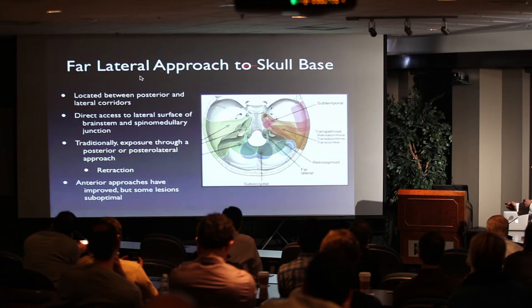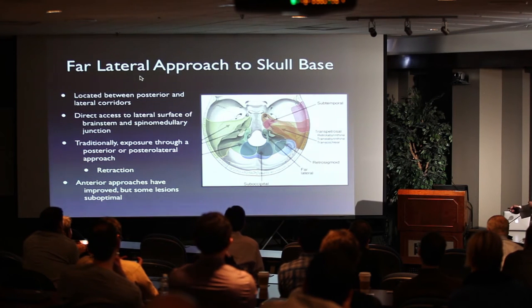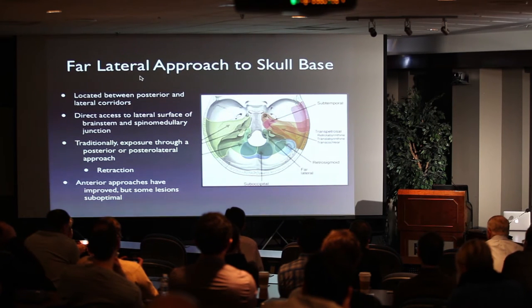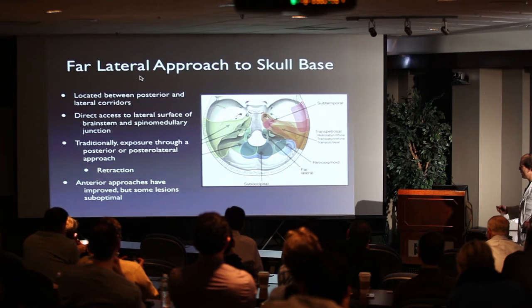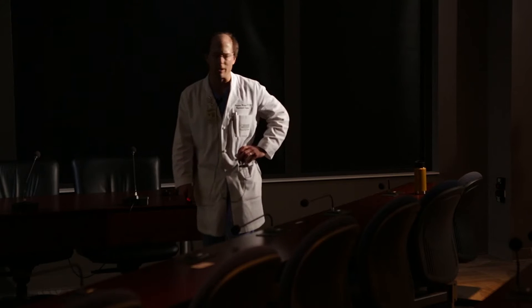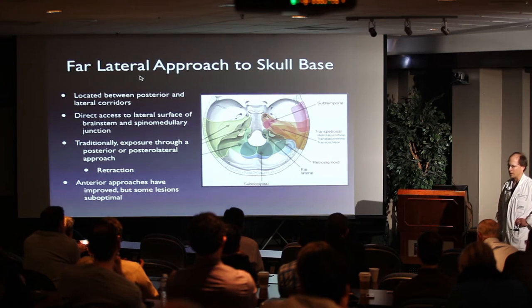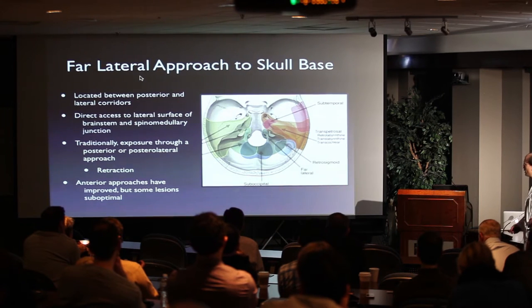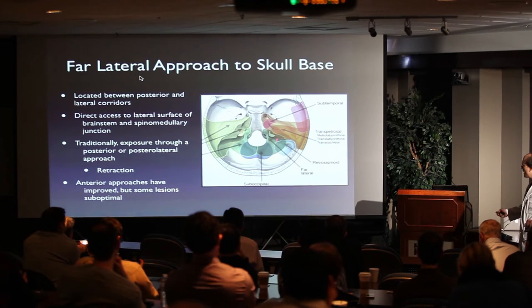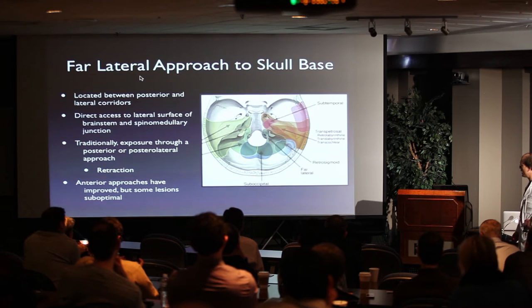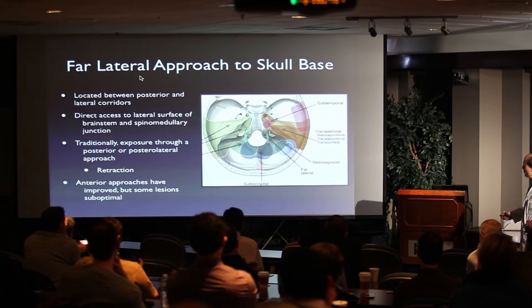With the far lateral approach, we've had the anterior approaches, the anterolateral, the straight lateral, and the posterolateral approaches in this mix. What you found traditionally is that the anterior approaches were a bit suboptimal. Prior to the modern endoscopic era, it was very difficult to get to this area directly through the clivus — problems with closure, etc. With a strict posterior approach, you had problems with retraction. So these anterior medullary and anterior foramen magnum lesions are really best approached through this far lateral approach.